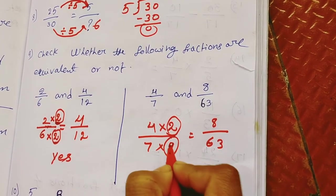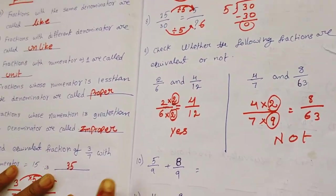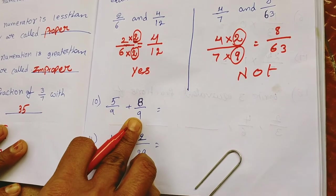So here 2 will come, here 9 will come. So these are not equivalent fractions. Next one is simple addition in fractions.